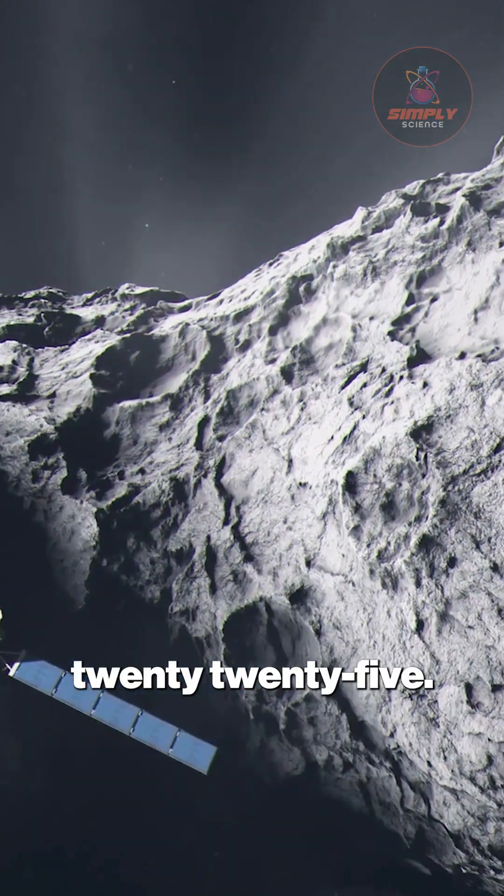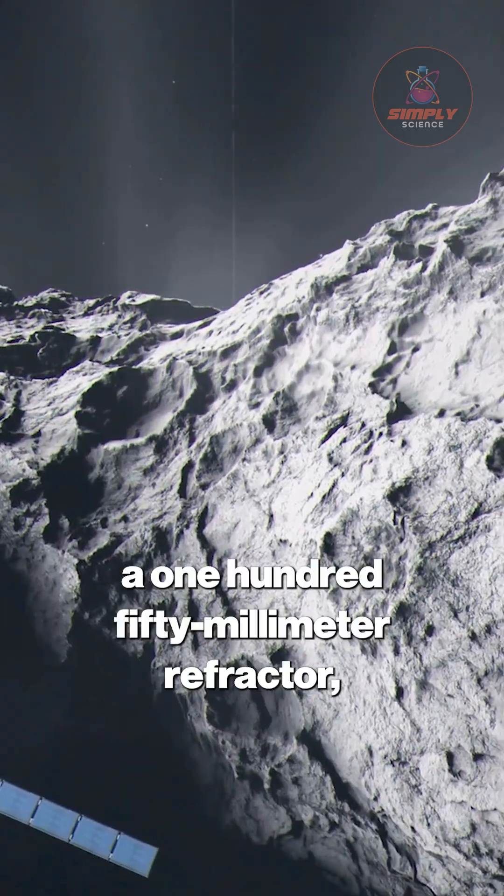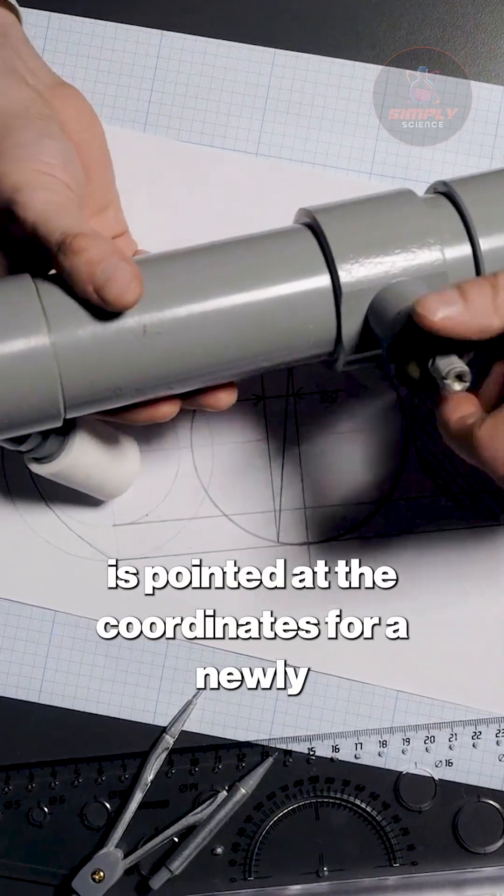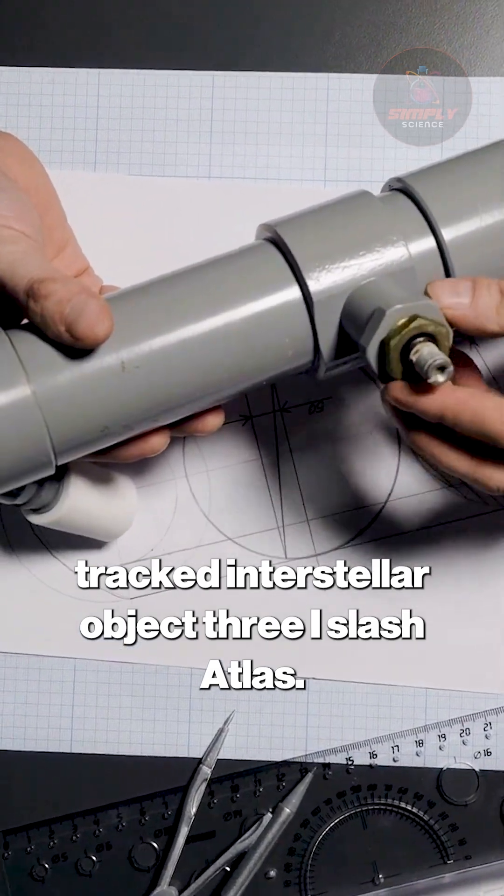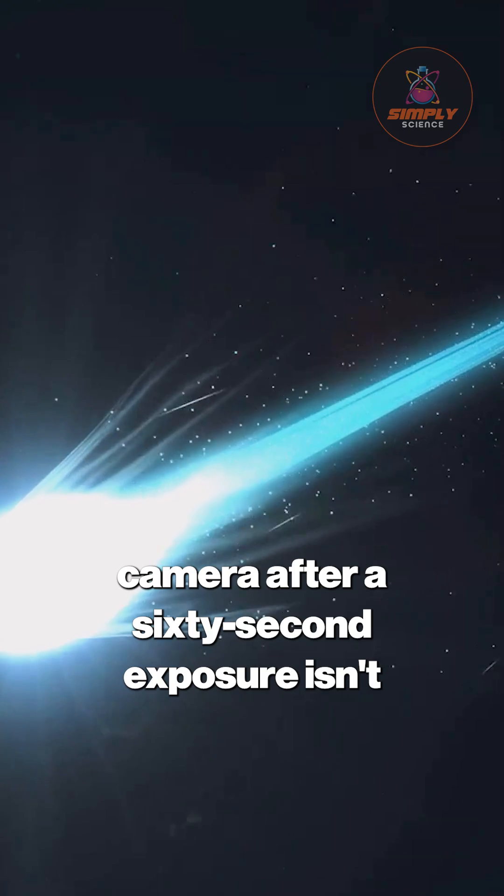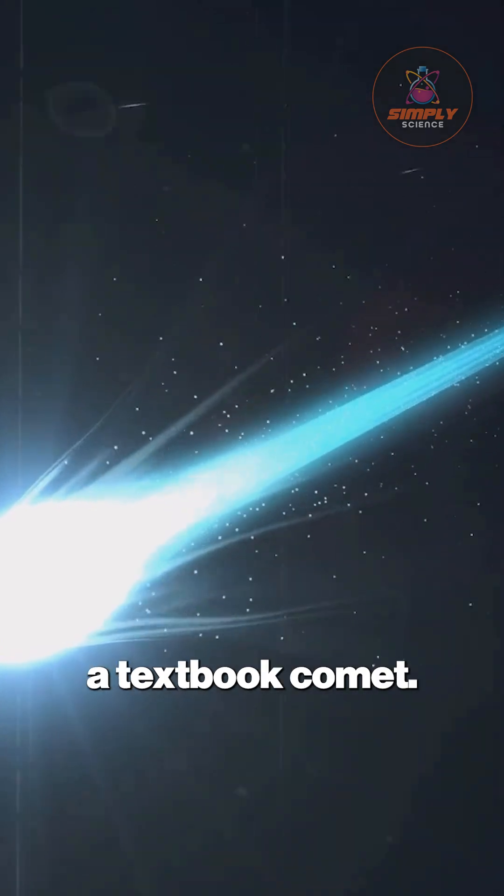The date is October 20, 2025. Her equipment, a 150mm refractor, is pointed at the coordinates for a newly tracked interstellar object, 3I-Atlas. What comes back from her cooled CMOS camera after a 60-second exposure isn't a textbook comet.